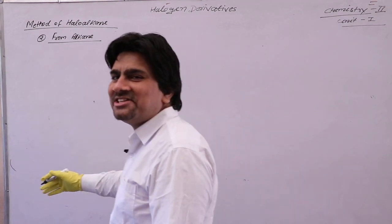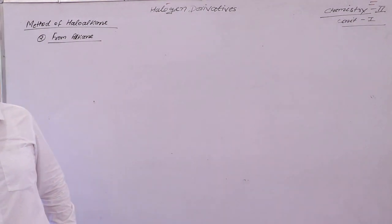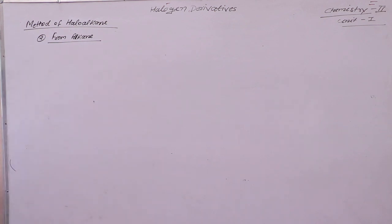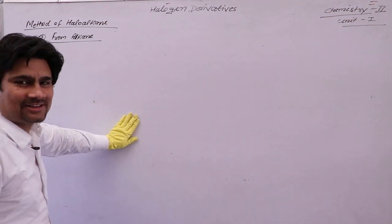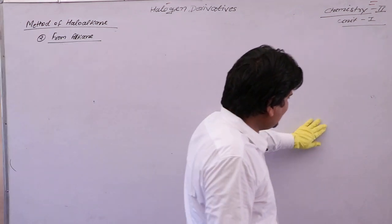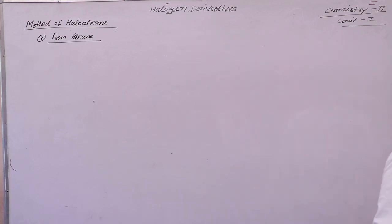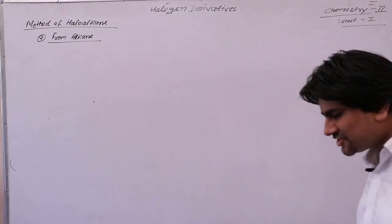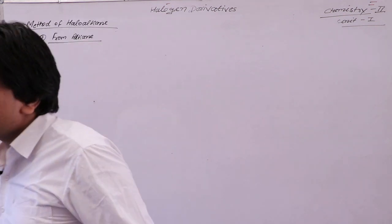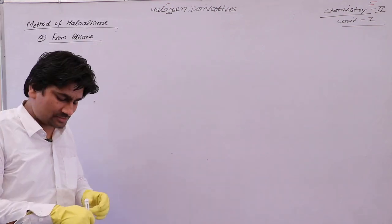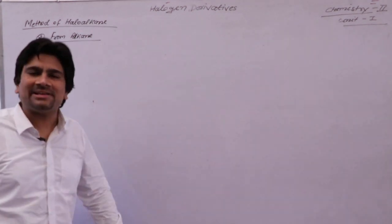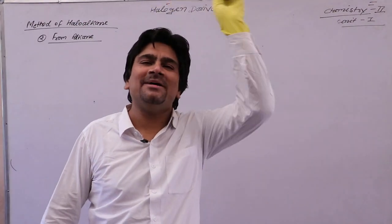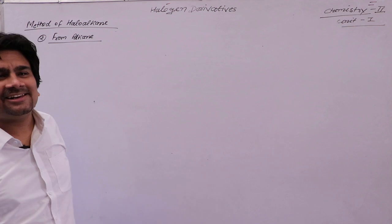Welcome to the Srisyam Group of Education. Today we will talk about the second method — from alkyne. Yesterday we were studying about methods from alcohol: the first method PCl₃, second method PCl₅, and third method thionyl chloride.